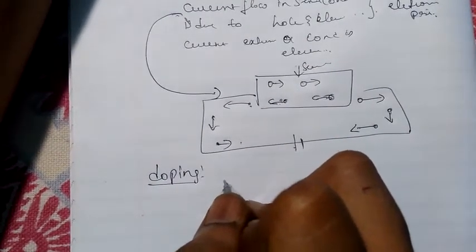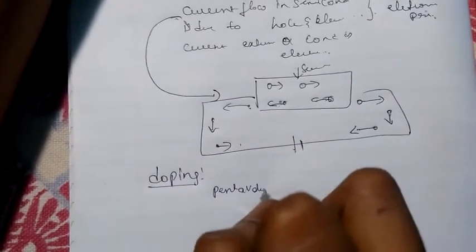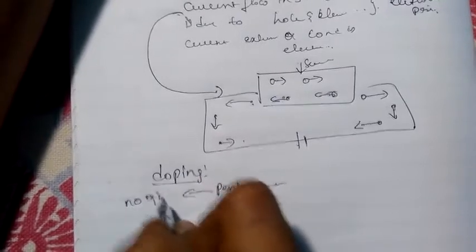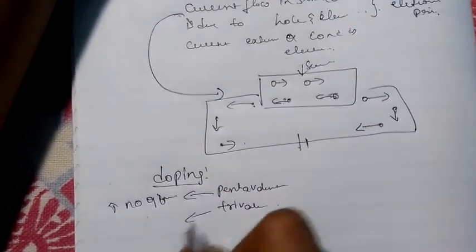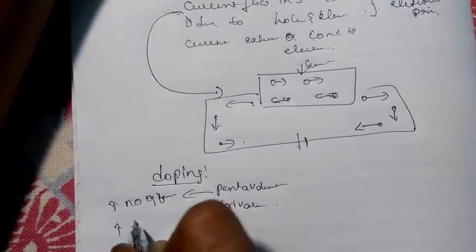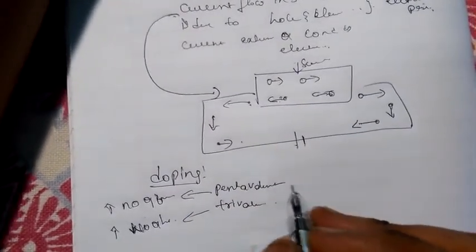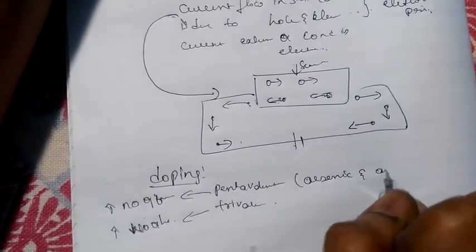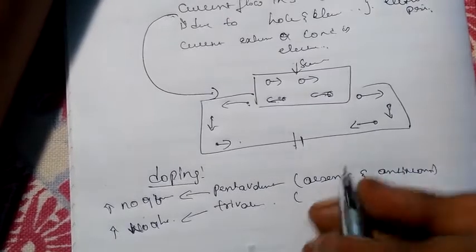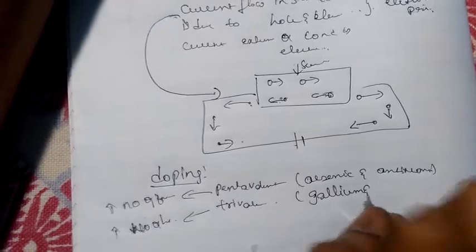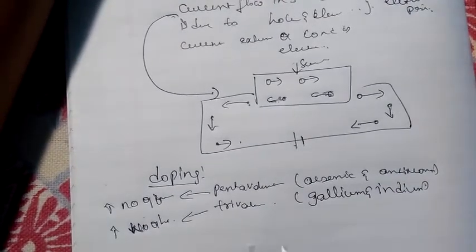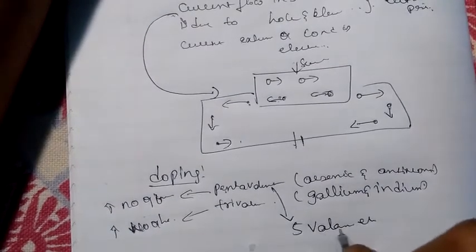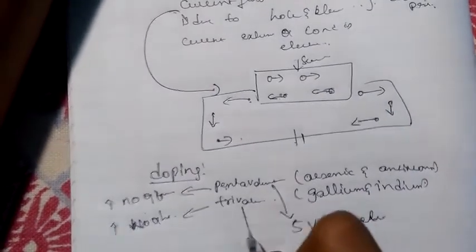The doping materials are pentavalent and trivalent. Pentavalent is added for increasing the number of free electrons, and trivalent is added for increasing the number of holes. Pentavalent impurities include arsenic and antimony, and trivalent impurities include gallium. Adding a pentavalent impurity provides five valence electrons, and adding a trivalent impurity provides three valence electrons.